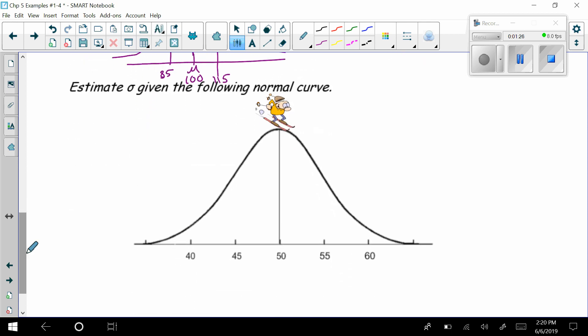And we move on down here. It says estimate sigma given the following curve. Great. So clearly, 50 right down here is mu.